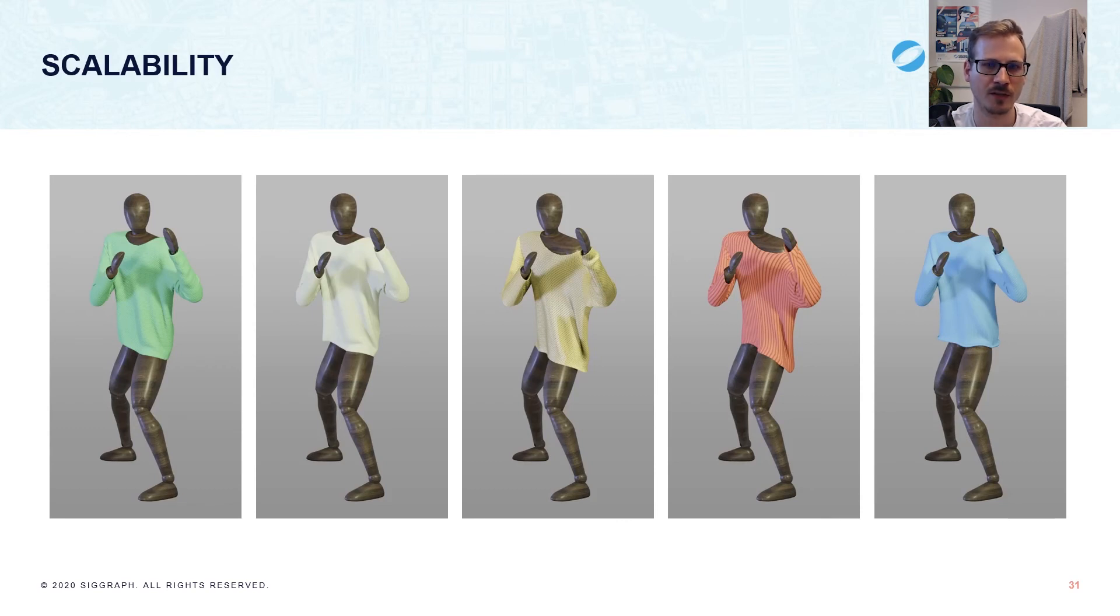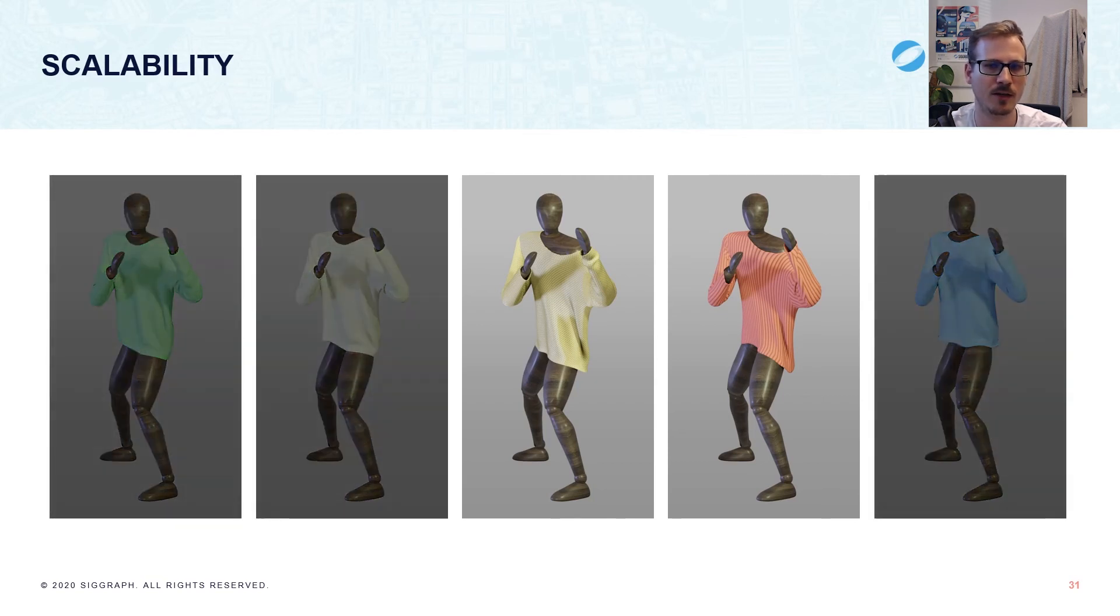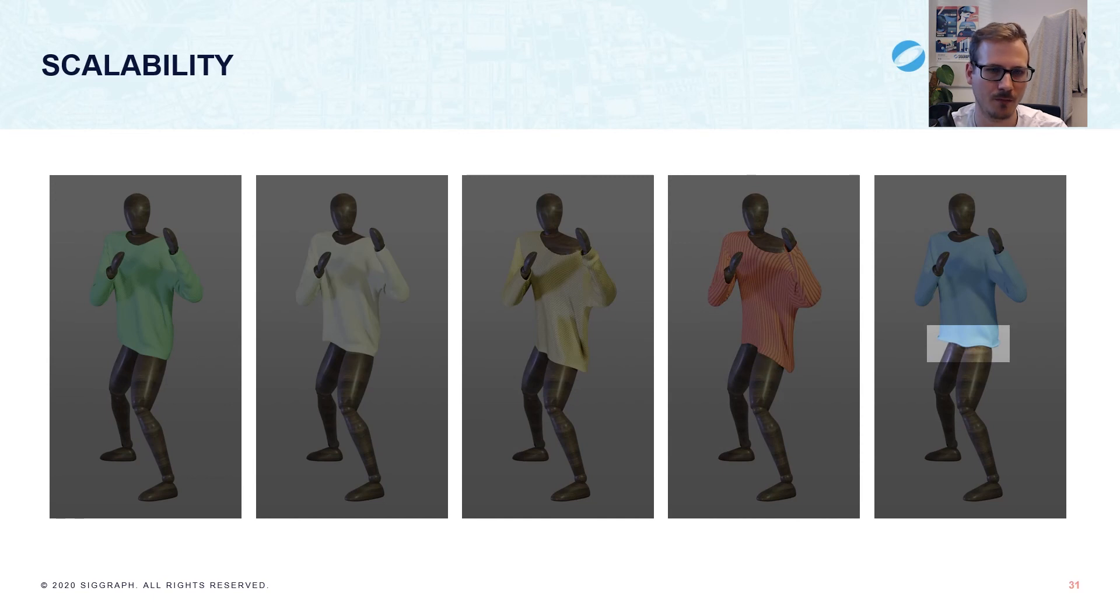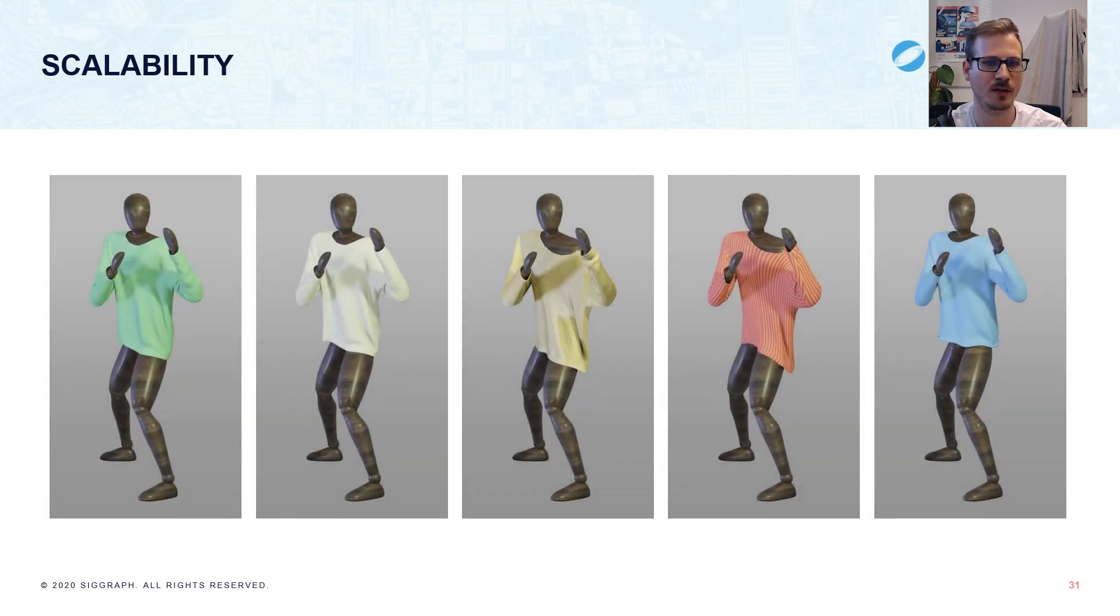But where our homogenized materials really shine is at larger scales, like simulations of entire sweaters. Simulating these sweaters directly as yarns, especially for long animations, can be incredibly expensive. Our materials make this much more tractable while still showing the pattern-dependent material behavior, including the stretchiness of these two knit patterns or the curling of the stockinette knit. And so with the benefits of mesh-based simulation, highly dynamic karate situations are barely more difficult than the smaller examples before.